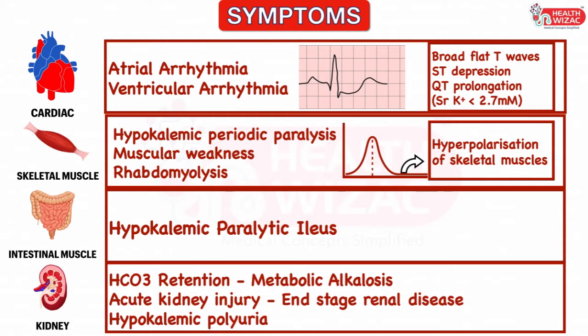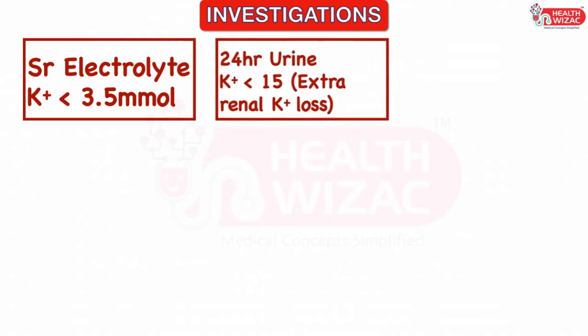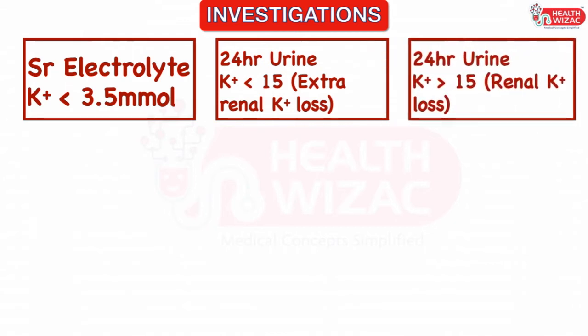Investigations helpful in diagnosing hypokalemia and its causes include serum electrolyte level, which may show potassium less than 3.5 millimoles. 24-hour urine potassium level: if its value is less than 15, it is suggestive of hypokalemia associated with extra-renal loss; whereas if its value is more than 15, it is suggestive of hypokalemia associated with renal loss.